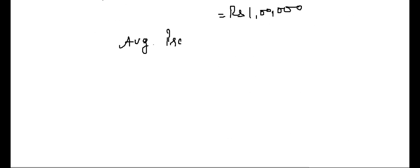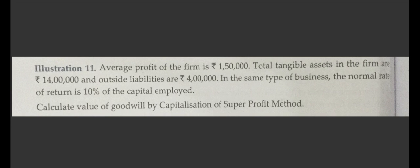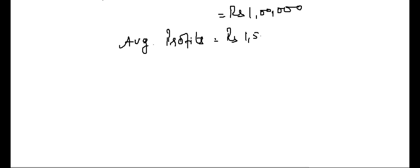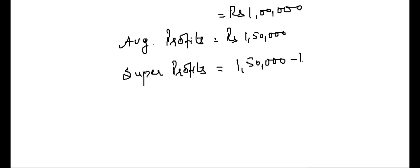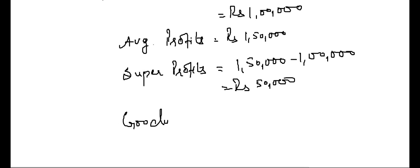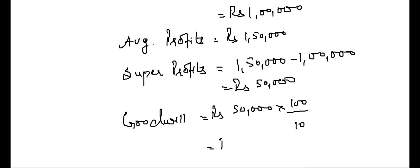The average profits are 1,50,000. So super profits = average profits − normal profits = 1,50,000 − 1,00,000 = Rs. 50,000. Goodwill by capitalization of super profits = 50,000 × 100 / 10 = Rs. 5,00,000. This is the amount of goodwill under the capitalization of super profits method.